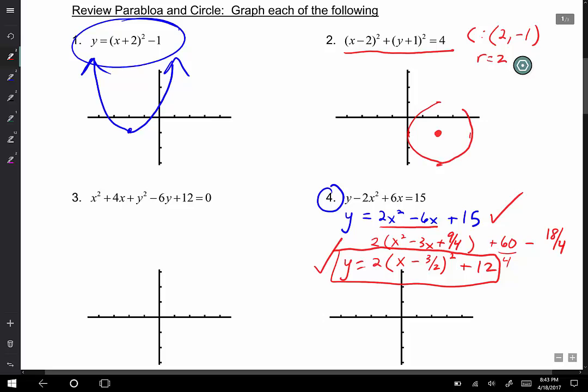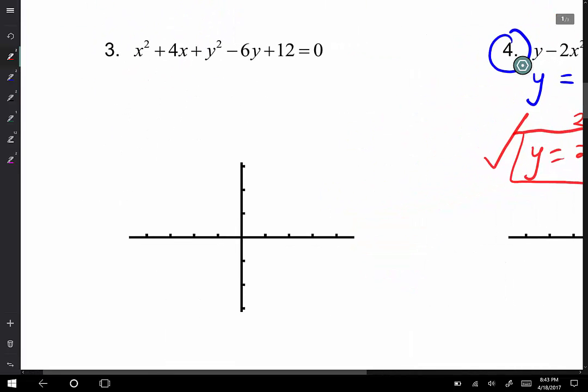That's easy, but we have to get good at completing the square. So number three, still a circle. How do I know? Positive x, positive y, same coefficient. But we are going to complete the square. So let's first look at the x's in red and we'll look at the y's.